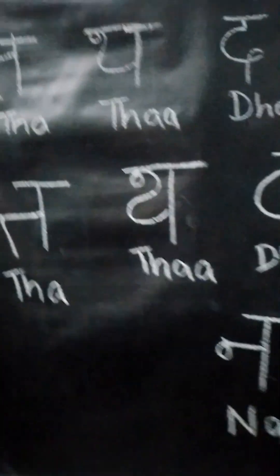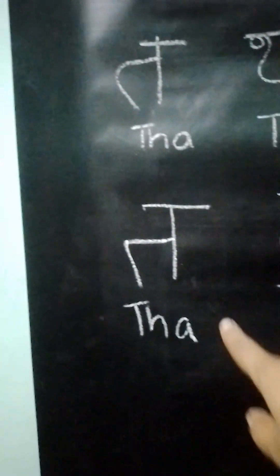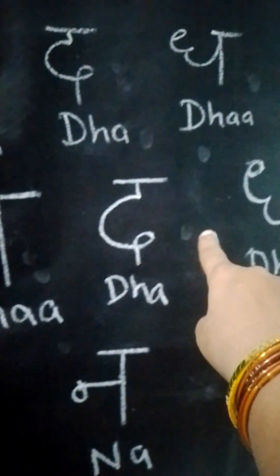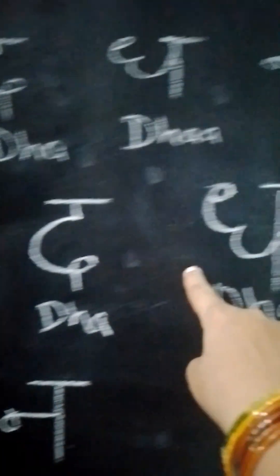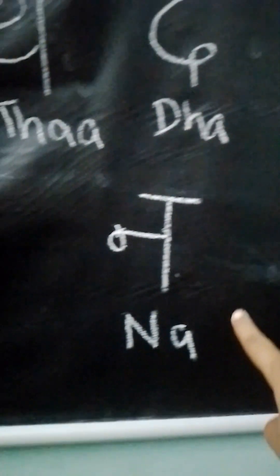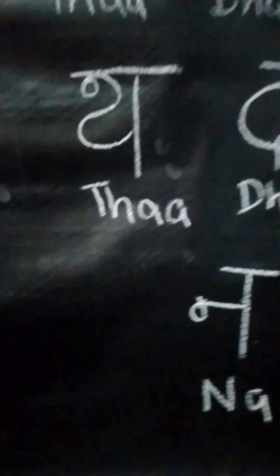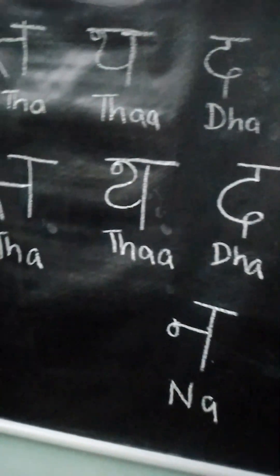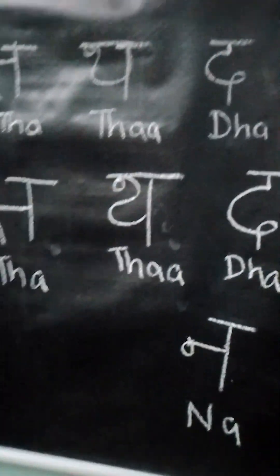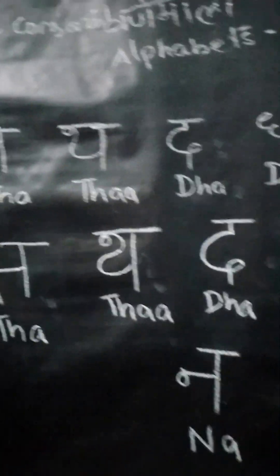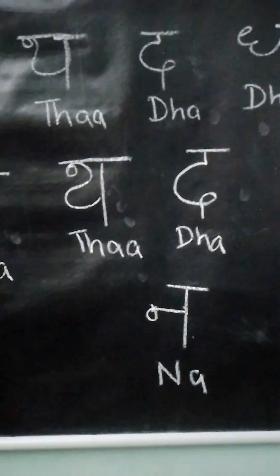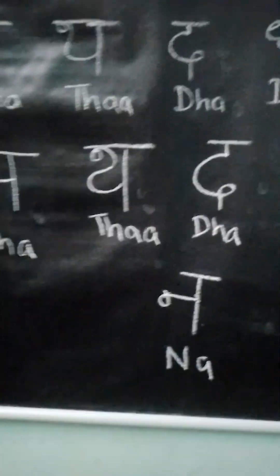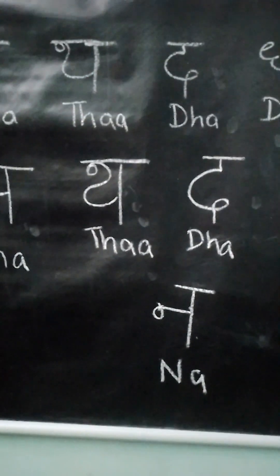We have now seen the five alphabets. Let's review: Tha, Tha, Da, Da, and Na. These are the five new consonant alphabets. Please write them down in your notebook and practice on a daily basis so that they will be memorized.